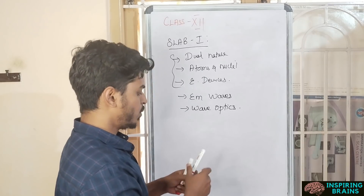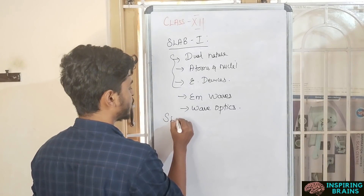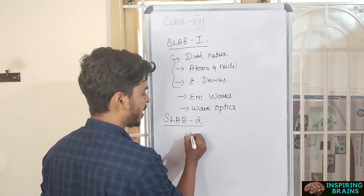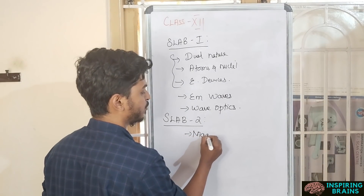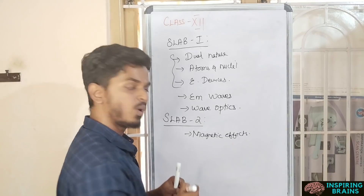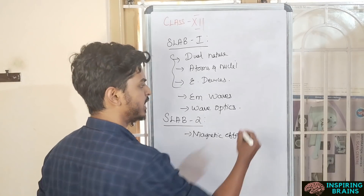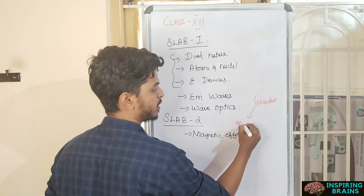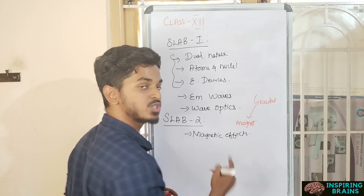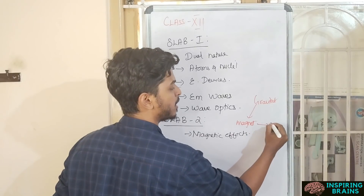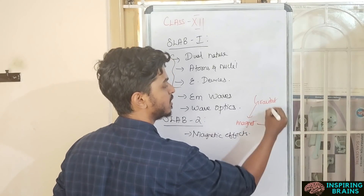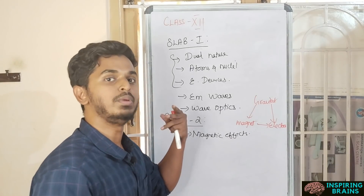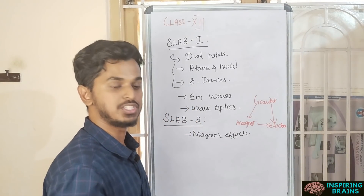Now for Slab 2, start with Magnetic Effects and Magnetism. As already mentioned, once you've studied Gravitation, you can easily apply those concepts to Magnetic Effects. Once you've studied both, you can easily apply those concepts to Electrostatics.